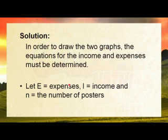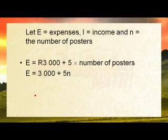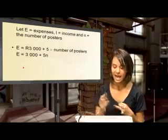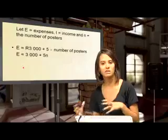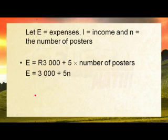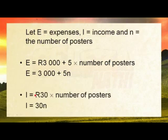In order to draw the two graphs, the equations for income and expenses must be determined. We'll let E = expenses, I = income, and n = number of posters. His expenses are 3,000 rand per month as a fixed cost, plus 5 rand for every poster he laminates. So the expenses equation is: E = 3,000 + 5n.